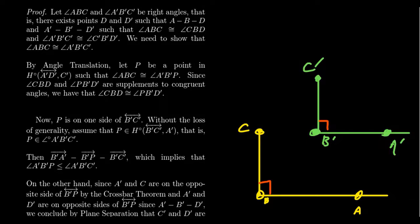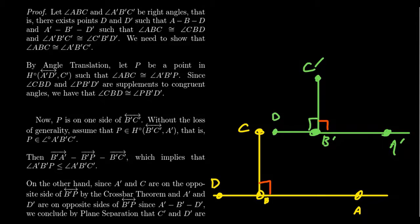What does it mean to be a right angle? It means that you're congruent to your supplement. So it makes sense to introduce the supplement. There is going to exist some point D so that B is between A and D. And we can do the same thing over here — extend the line so that there's some point D' — and it will then be the case that angle D'B'C' is congruent to angle A'B'C'.